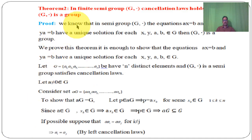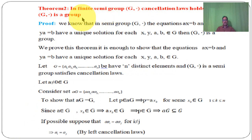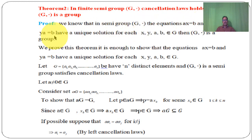Next, Theorem 2: In a finite semigroup G dot, if cancellation law holds, then G dot is a group. We proved in the previous theorem that if in a semigroup G dot the equations AX equal to B and YA equal to B have a unique solution for each X, Y, A, B belongs to G, then G dot is a group. Using that theorem, we prove this theorem.